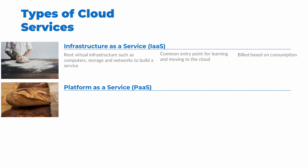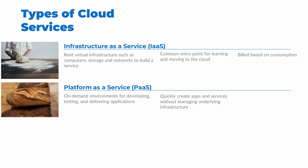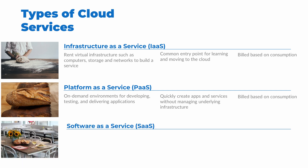The next type of cloud service is platform as a service, or PaaS. These are pre-created, on-demand environments for deployment, testing, and delivering web and mobile applications, as well as other services. If we need to create a web service, we don't have to go through the process of configuring a virtual network, creating virtual servers, and deploying web server software. Just like buying the loaf of bread instead of making it, we can buy pre-configured web platforms. That way, the team can focus on developing applications instead of managing infrastructure. Platform as a service is also built based on resources used.